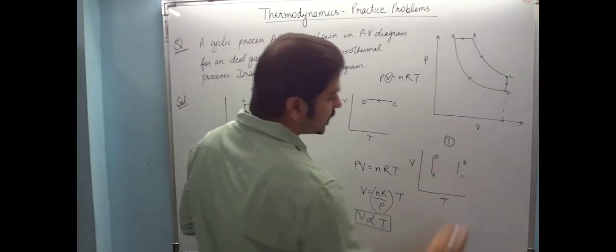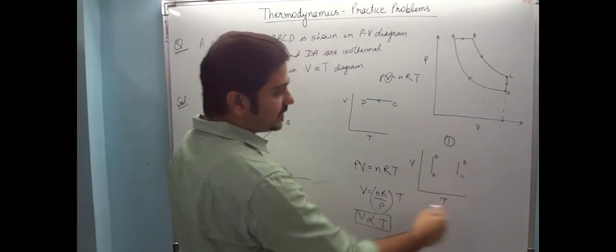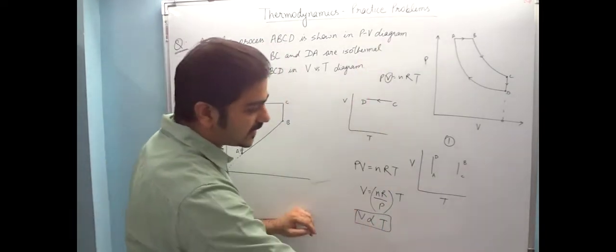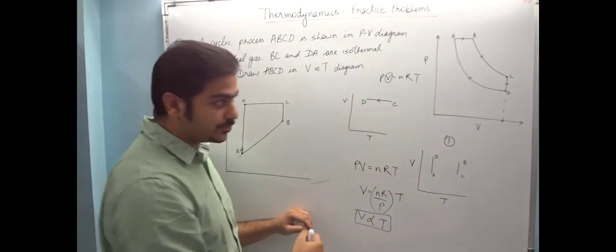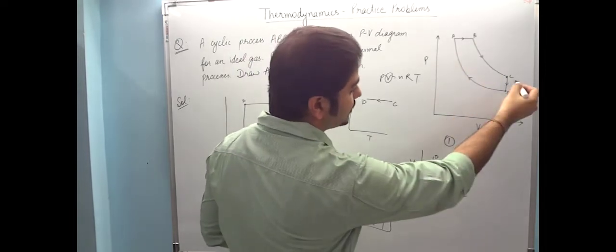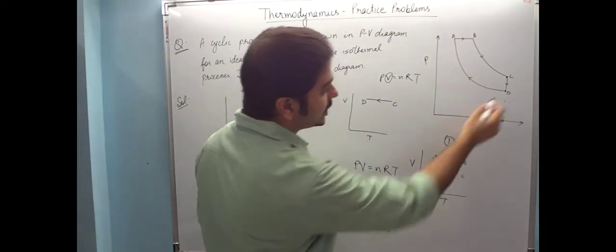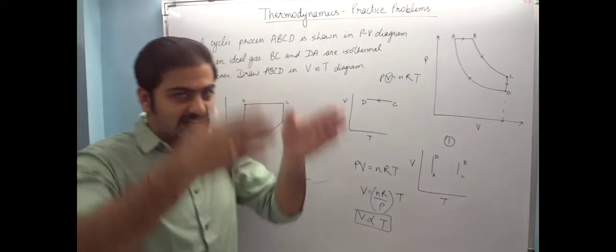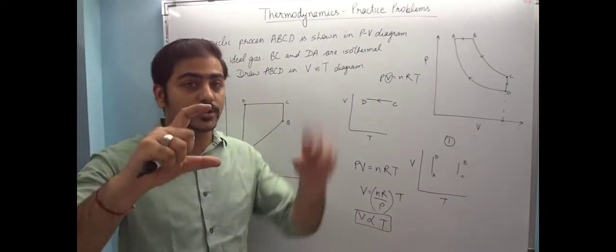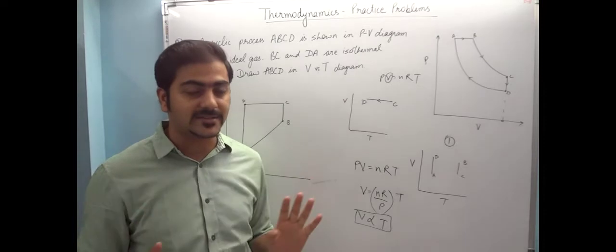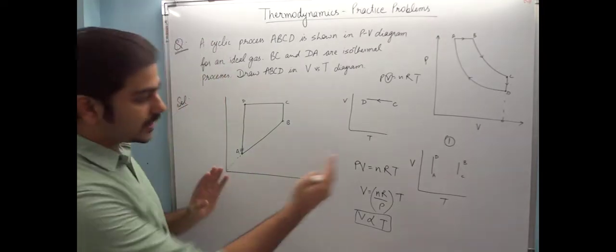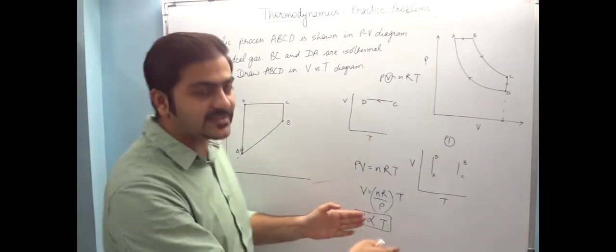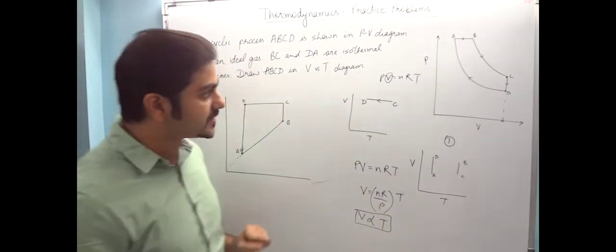If we have to make VT diagram, V vs T, then wherever temperature is constant, there will be a straight line parallel to volume. So from B to C, one straight line will form. From D to A, one straight line will form. So I understood here that two straight lines will come. Now which line is big, which line is small - we cannot guess yet. If B or C will come here or there, we also cannot guess yet. But we know two straight lines will come.